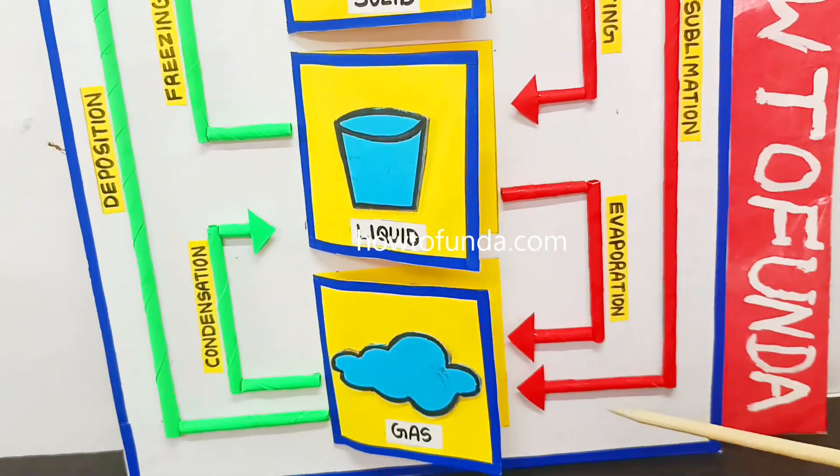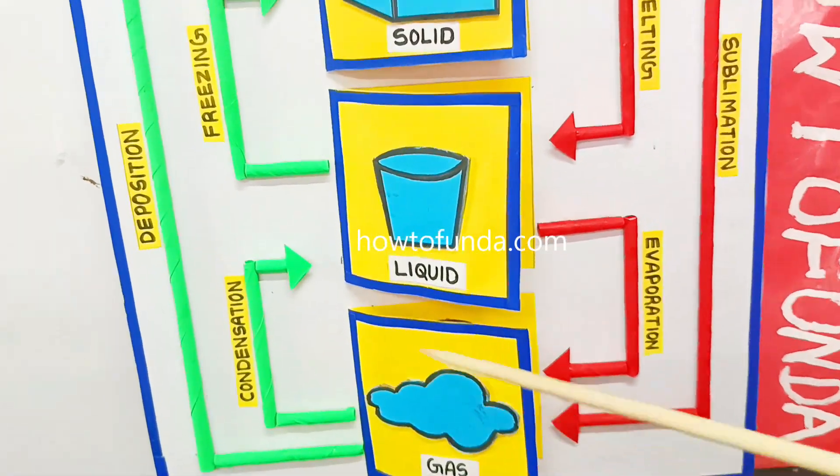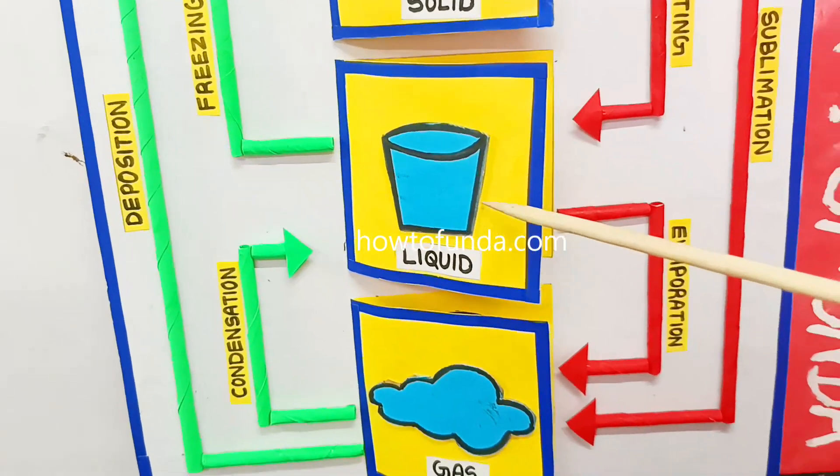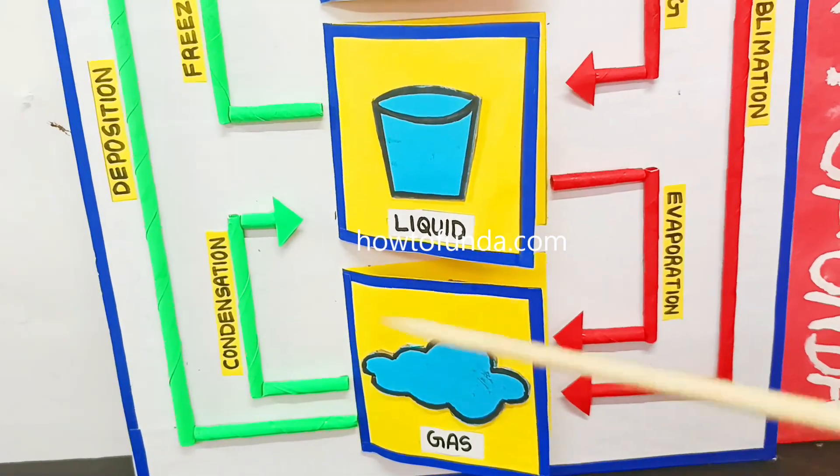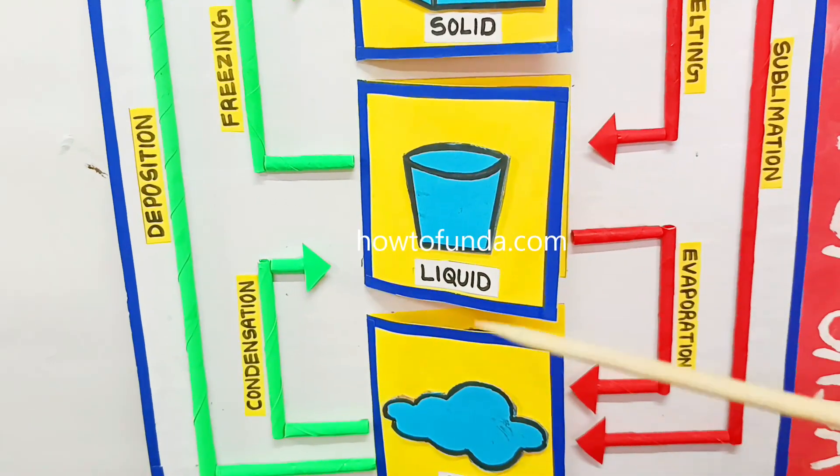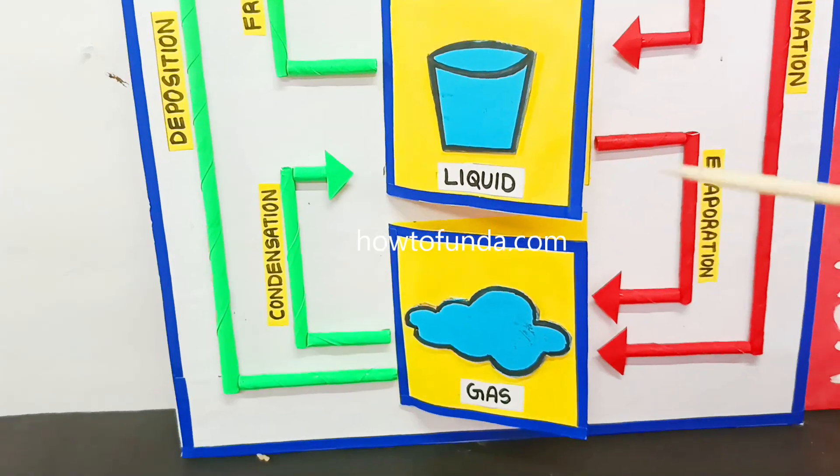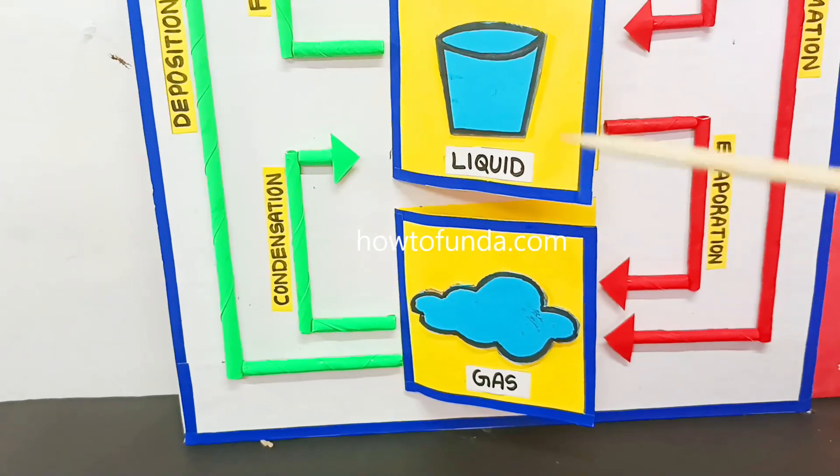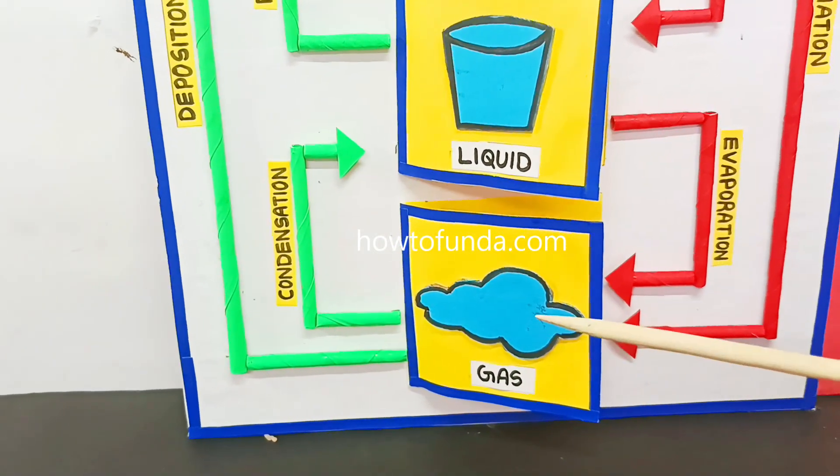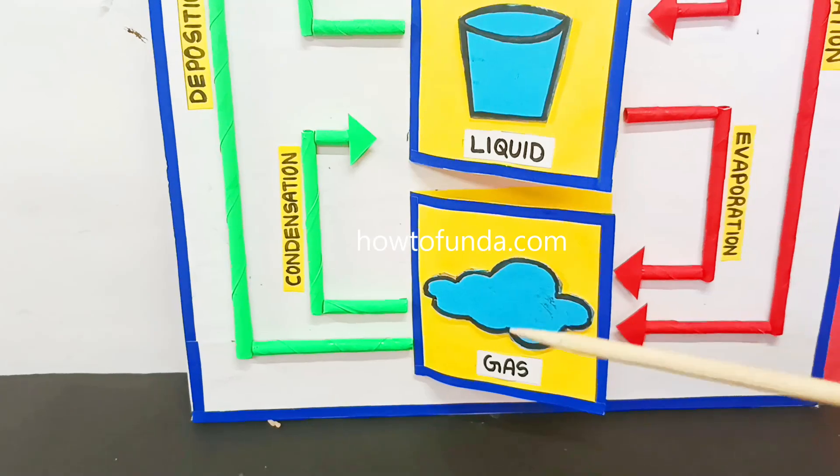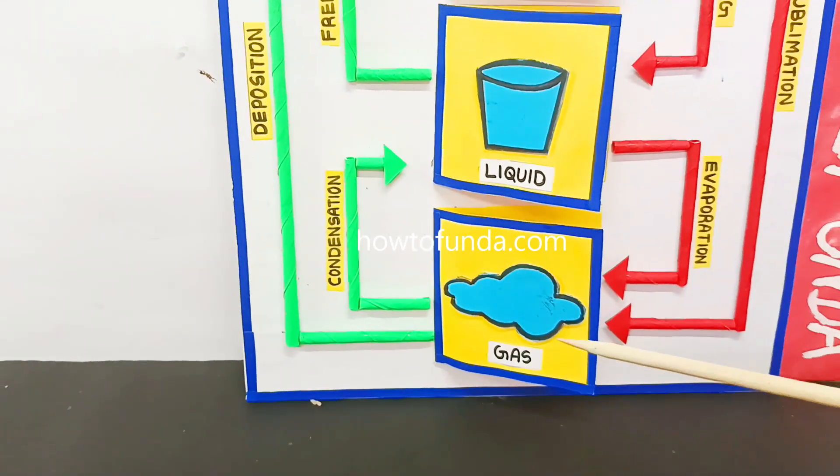Even if there are solids which if we do sublimation, directly it becomes a gas. Similarly, from liquid to gas, as we boil the liquid, evaporation happens and it turns the liquid into gas.